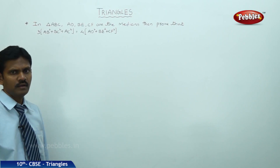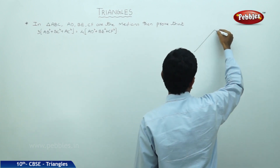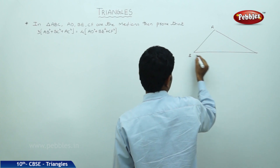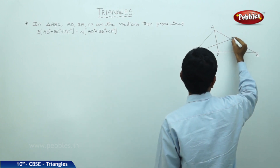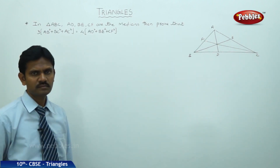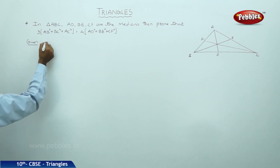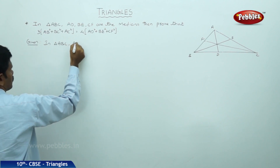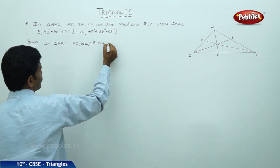From the given question, in triangle ABC, AD is a median, BE is a median, and CF is a median. Given in triangle ABC, AD, BE, CF are medians.